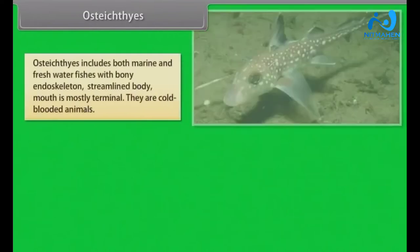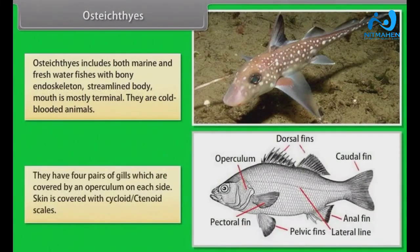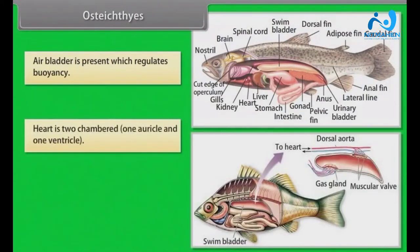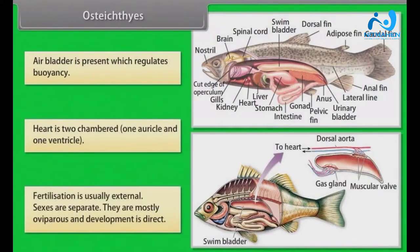Osteichthyes includes both marine and freshwater fishes with bony endoskeleton and streamlined body. Mouth is mostly terminal. They are cold-blooded animals. They have four pairs of gills, which are covered by an operculum on each side. Skin is covered with cycloid or ctenoid scales. Air bladder is present, which regulates buoyancy. Heart is two-chambered: one auricle and one ventricle. Fertilization is usually external. Sexes are separate. They are mostly oviparous and development is direct.